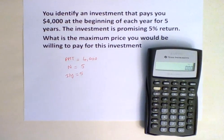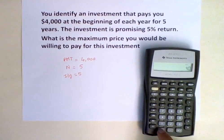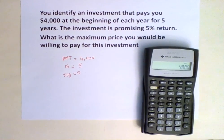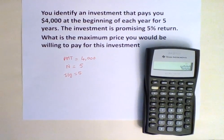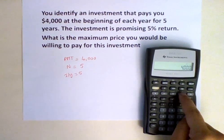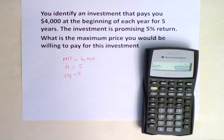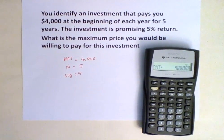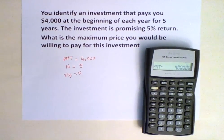Now we can input our information. $4,000 would be the money we would be getting at the beginning of each year, so it would be entered as payment. This is a cash inflow, so it's a positive number.